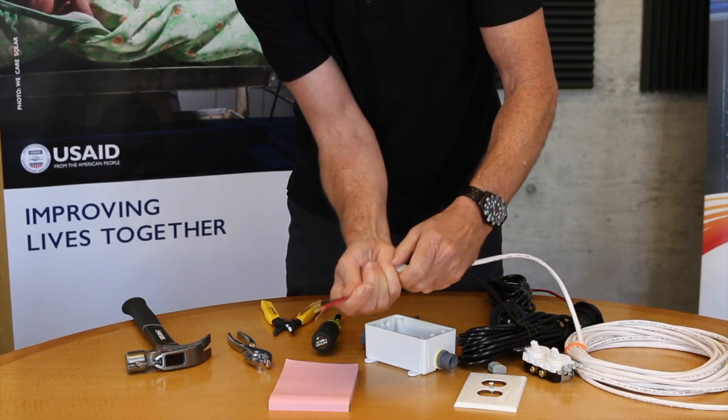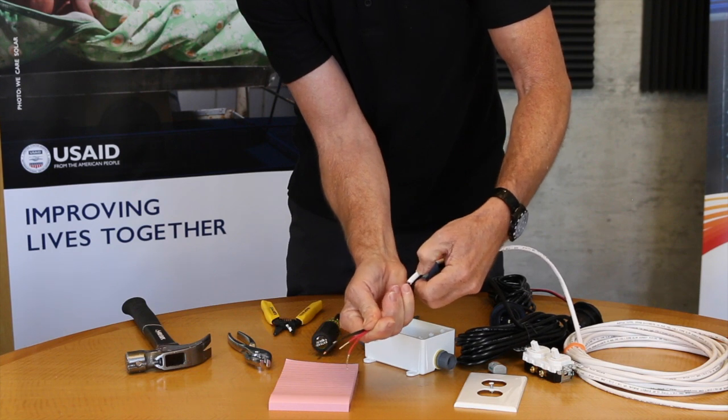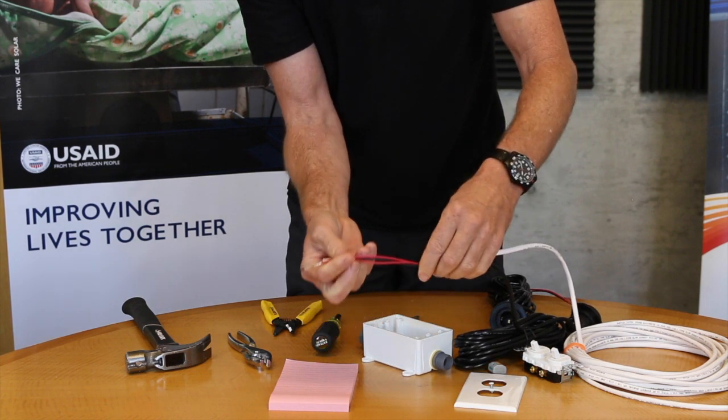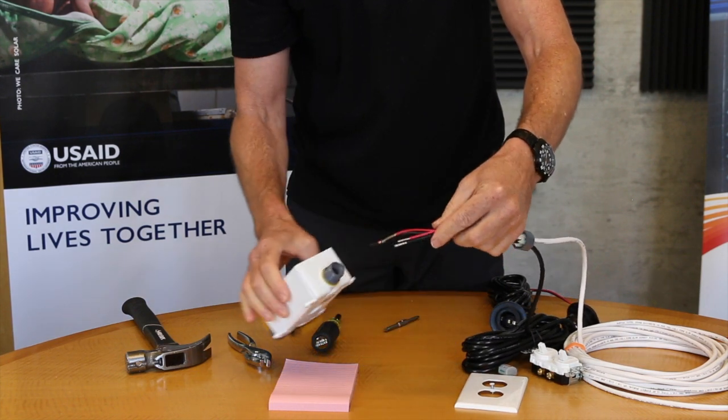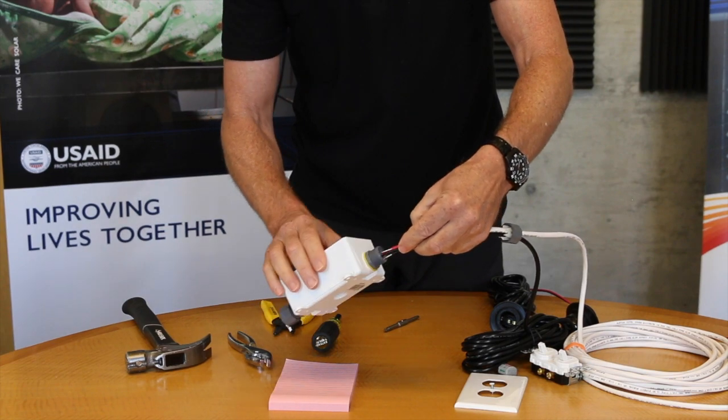Slip the bushing on. This part's a little bit challenging, but you'll be able to do it with a little bit of elbow grease. And then I'm going to feed this through the cord grip and into the box.